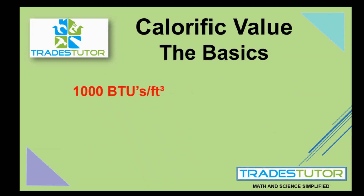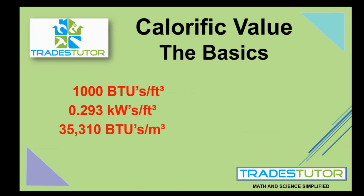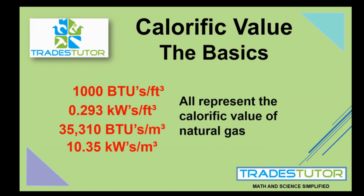Now, that's not the only way we can write this — there are three other ways, using all the variables in their different forms. We could have kilowatts per cubic foot, BTUs per cubic meter, or kilowatts per cubic meter. All four of those represent the calorific value of natural gas expressed in different ways. The idea is how do we go from one to the other and translate between all of them? That's what part two of the video series is going to show you — we're going to go through natural gas and generate all four numbers, starting with 1,000 BTUs per cubic foot.